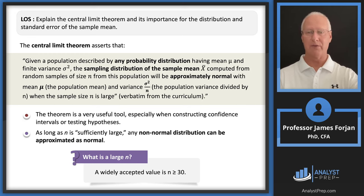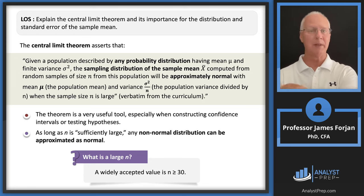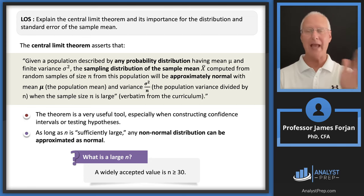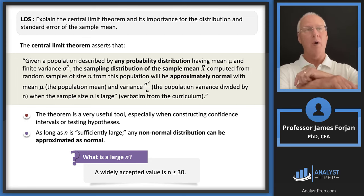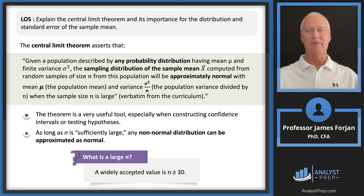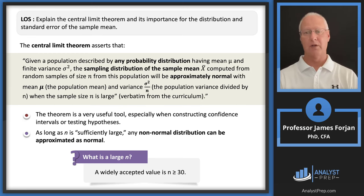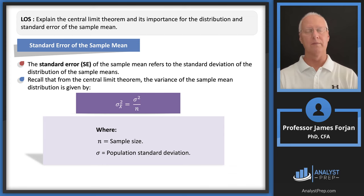I want to emphasize this point: the definition says 'given a population described by any probability distribution.' That means my blades of grass could follow any probability distribution, but when you sample them, the result is going to turn out to be almost a normal distribution. That's important.